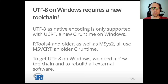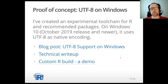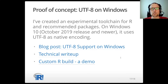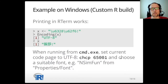We need a toolchain that builds everything with this new C runtime. Rtools4 is not new enough, and we have to rebuild our libraries for all packages and R itself. As a proof of concept, I have created an experimental toolchain for R that is good enough to build R itself, the base packages, and the recommended packages. I have described the details in my blog post and even more details in a technical write-up. I also created a custom R build with an R installer that anyone can use to play with this, and one can also download my toolchain. The toolchain only supports some packages, not all CRAN and Bioconductor packages.